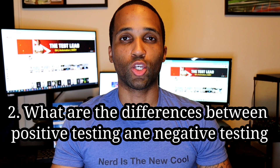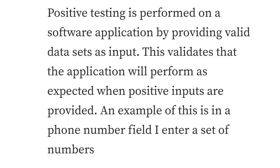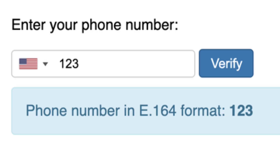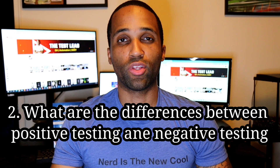Question number two: can you explain the differences between positive testing and negative testing? Positive testing is performed on a software application by providing valid data sets as input. This validates that the application will perform as expected when positive inputs are provided. An example of this is for a phone number field inside a webpage — I enter numbers that simulate a phone number.